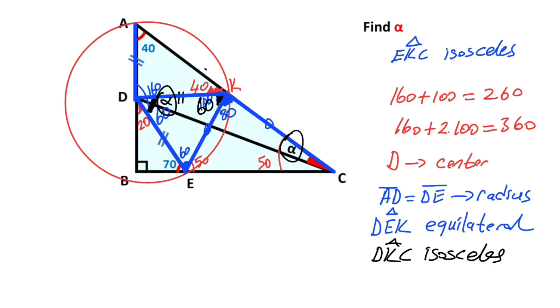So if here is alpha, it means here must also equal alpha. We know that the sum of two interior angles equals one exterior angle, so 2α equals 40 degrees, therefore alpha is going to be 20 degrees.